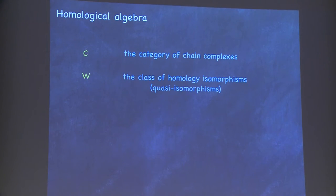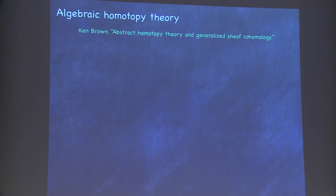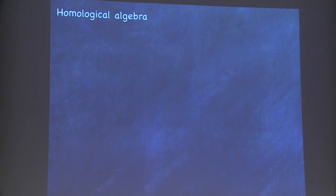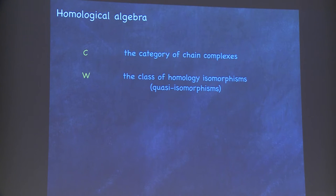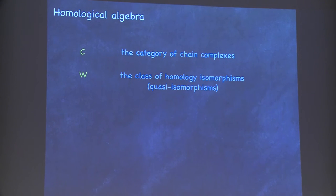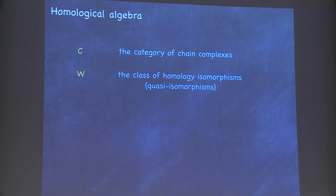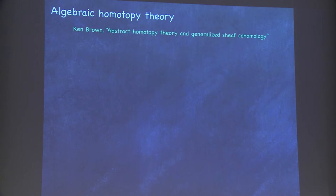Homological algebra also gets absorbed in this abstract homotopy theory world. In fact, Quillen called abstract homotopy theory homotopical algebra. You take the category of chain complexes, possibly bounded below, and the weak equivalences are quasi-isomorphisms. Your intention is to only study functors that send quasi-isomorphisms to isomorphisms.